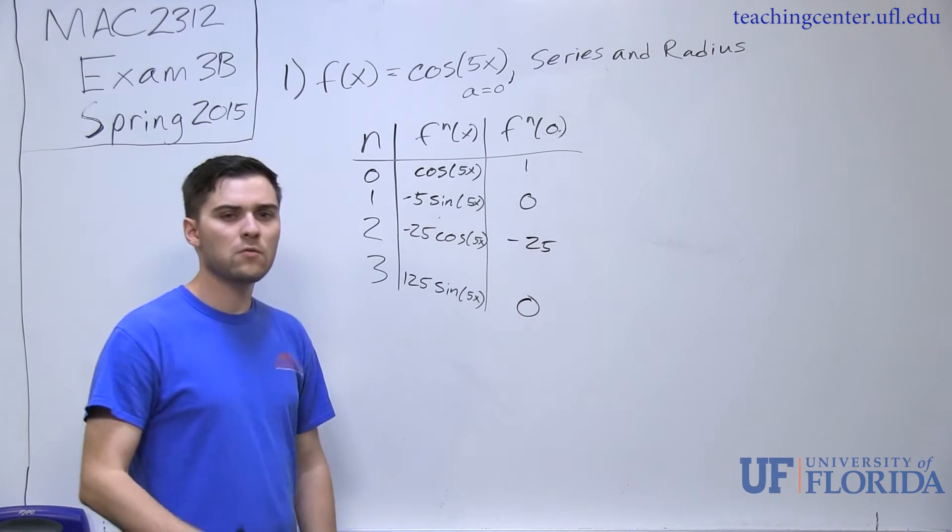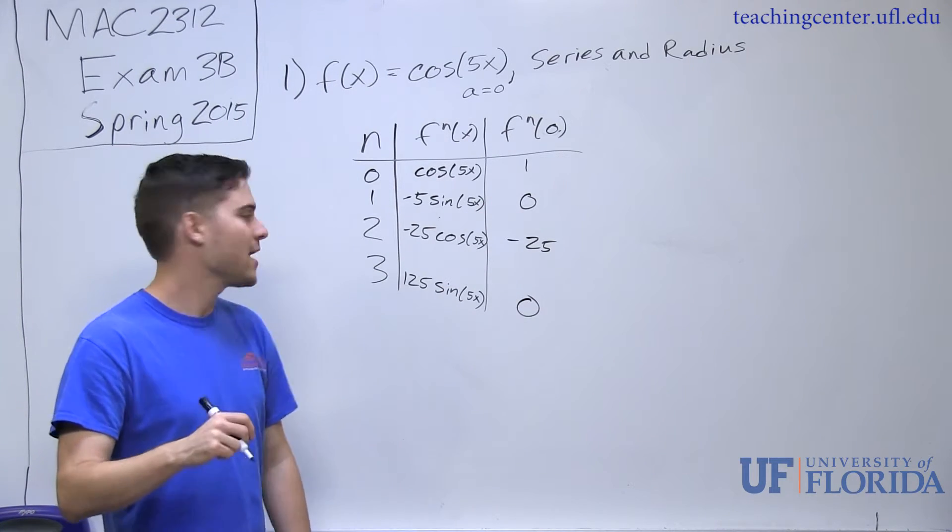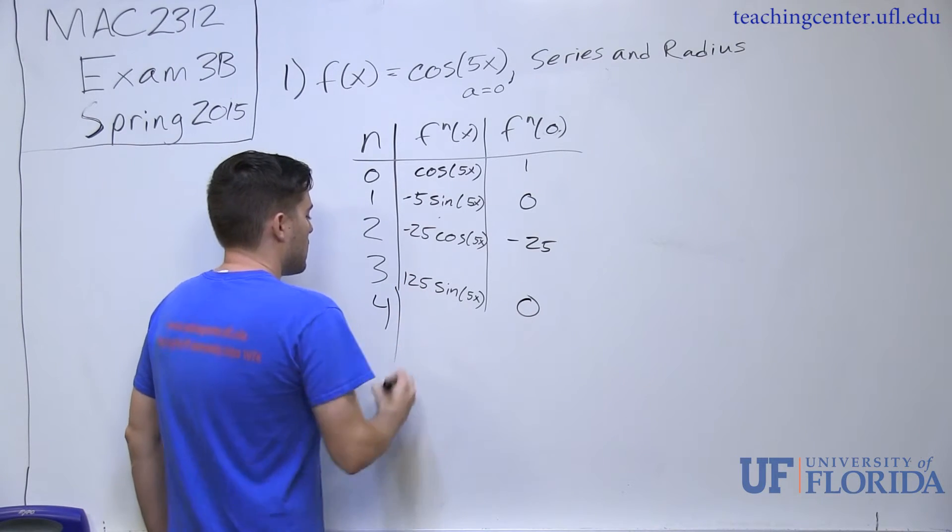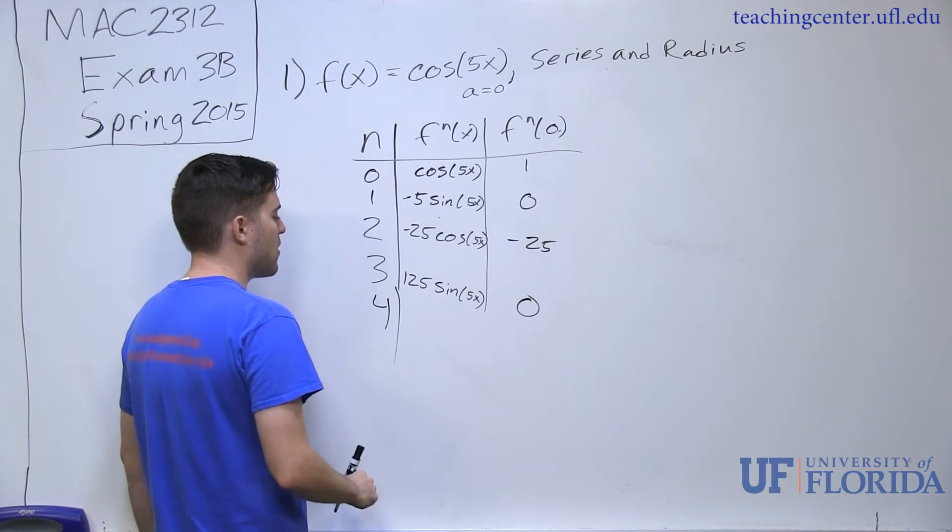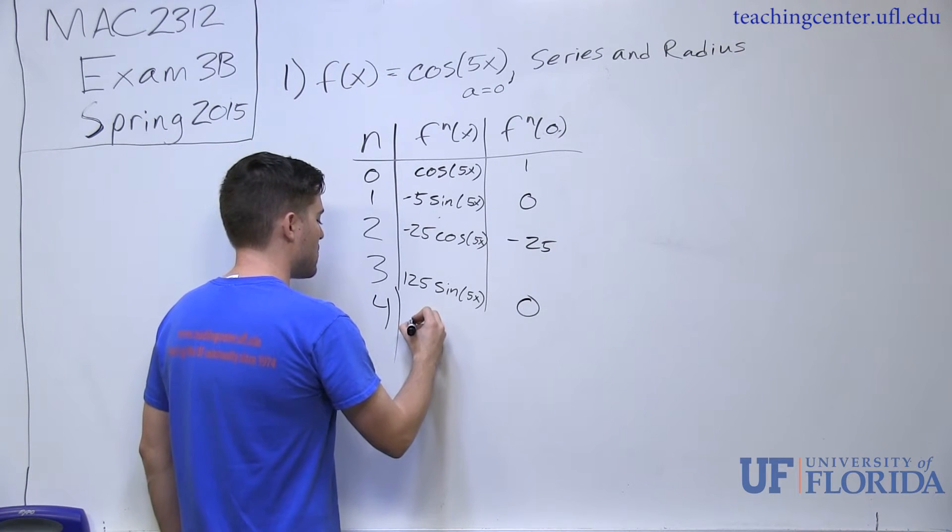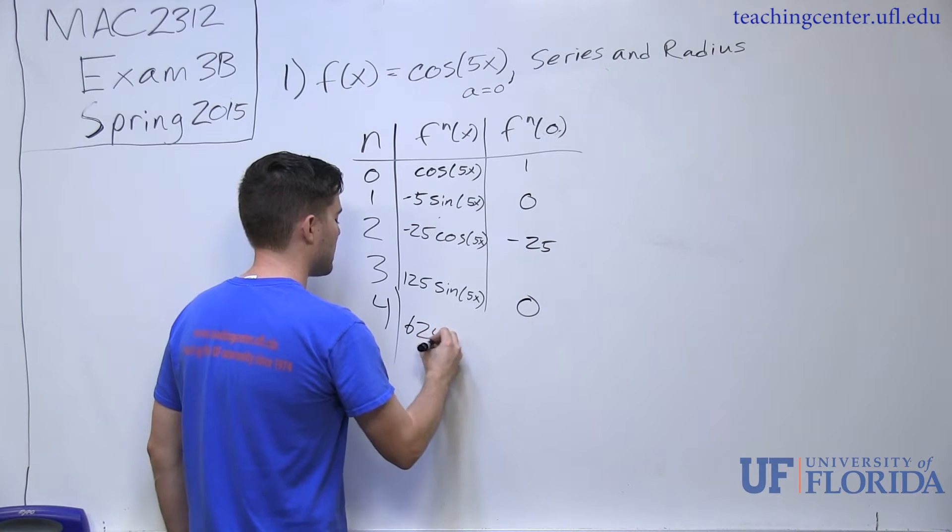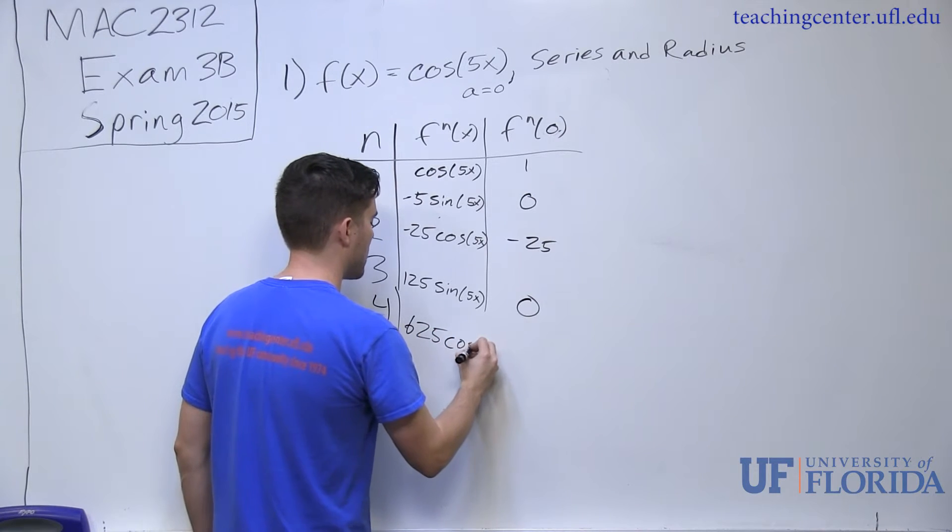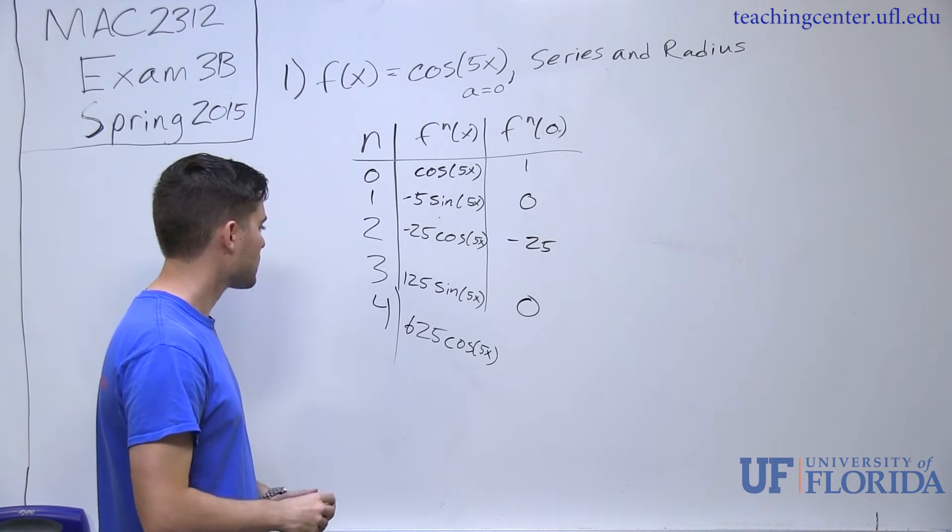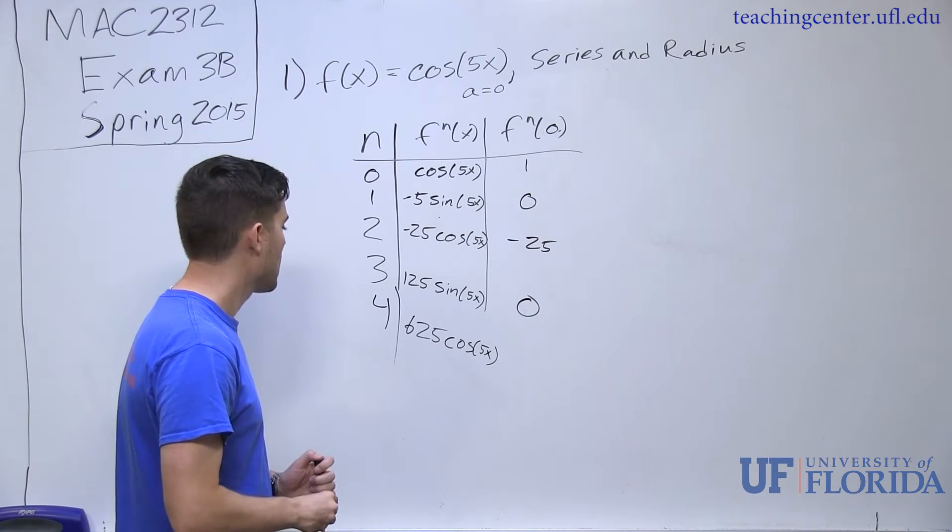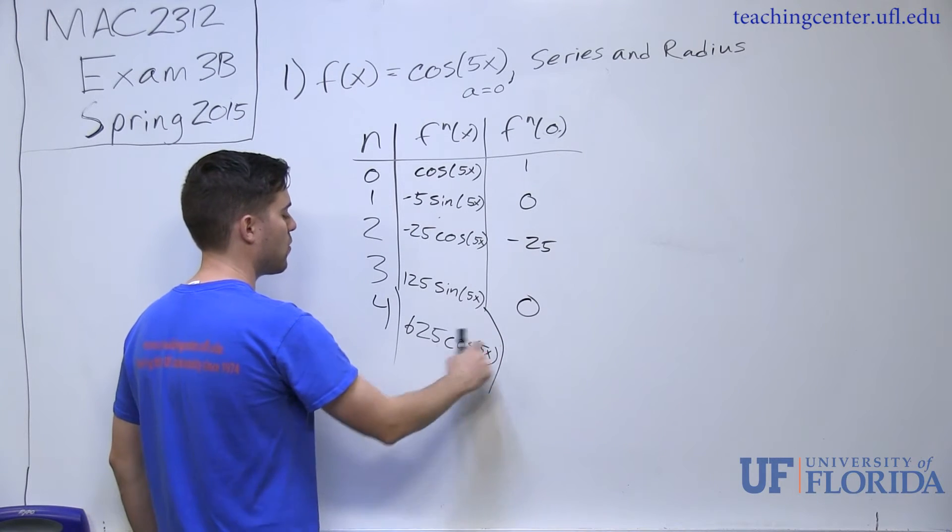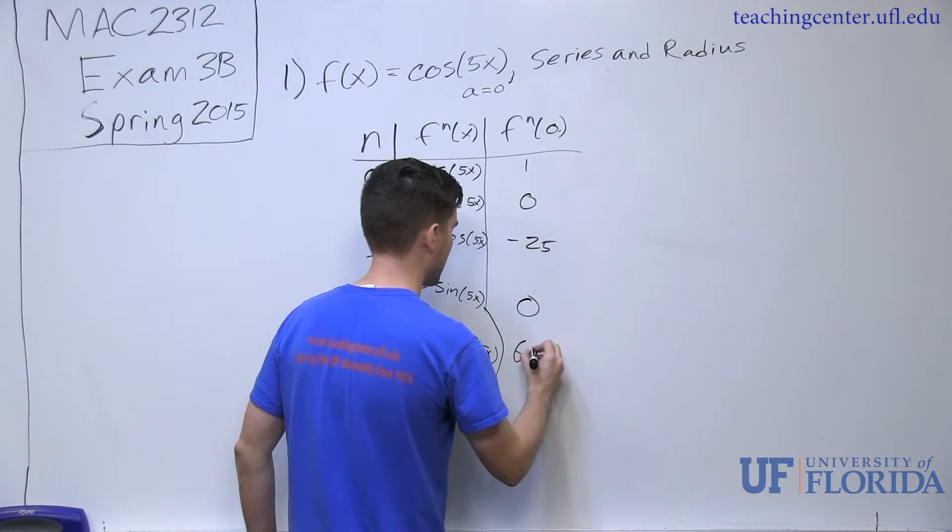Two of my terms are zero, so I'm actually going to go ahead and add a fifth term in this case. If I take the derivative again, 125 times 5, that would be 625 in this case, cosine of 5x. So, knowing that now, I can go ahead and reevaluate this at zero. I end up with 625.